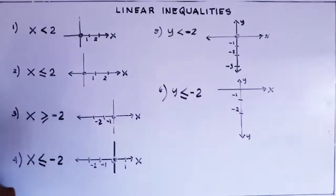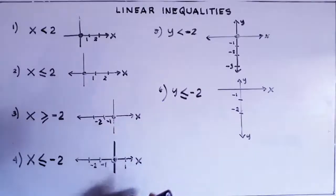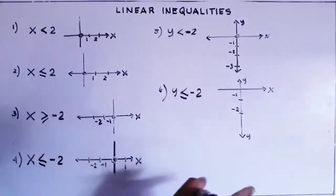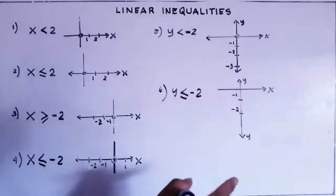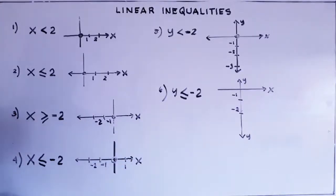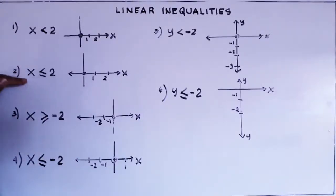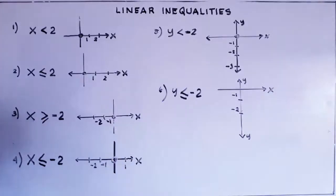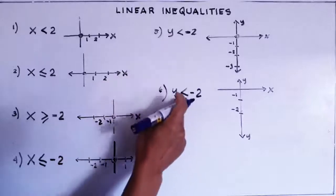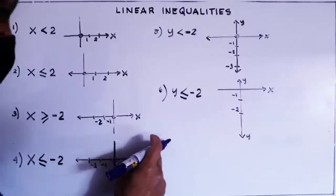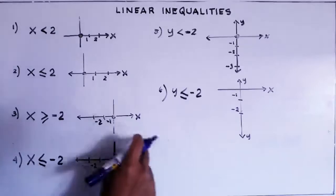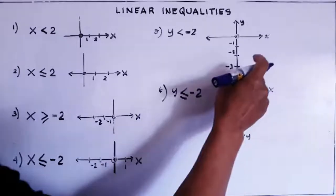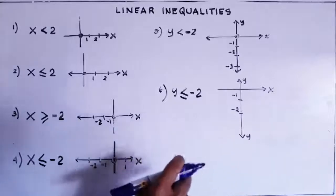We will have first the horizontal lines and the vertical lines. Then we proceed to the lines that are slanting to the right and slanting to the left. When we have that one, expect that we have x and y in our equation. If we have x only, we have a vertical line. If we have y only, we have a horizontal line. For y with x, it's either slanting to the right or slanting to the left.